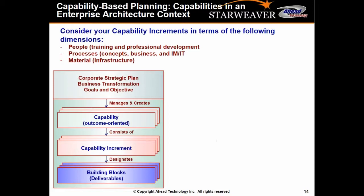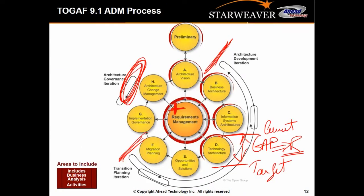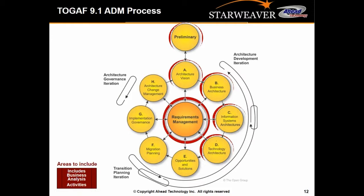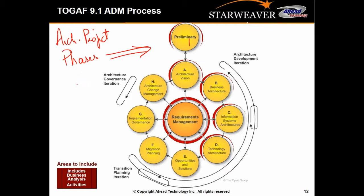The ADM is a set of processes and phases. You could use this as an architecture project where the project phases are basically what you see in the ADM — Phase A, B, C, D — all different phases of your architecture project. There is no more development after migration planning; that is where your architecture development stops. The next two phases check what you have in the live or operational environment and provide oversight on whether what you delivered is in alignment with the architecture.